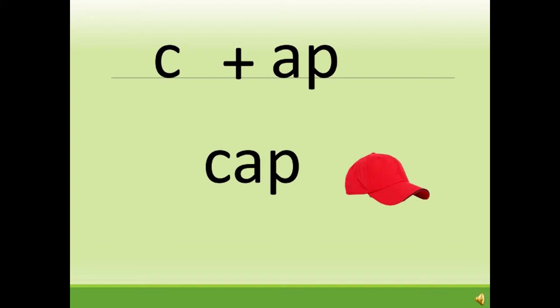We have to remember that when we are reading three-letter words or family words, we are not going to break the 'ap.' We are going to read it as c-ap: cap. We are not going to say just 'ap' — no, that is wrong. So c-ap: cap.